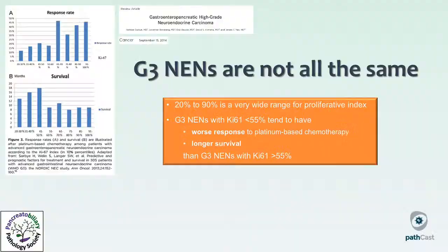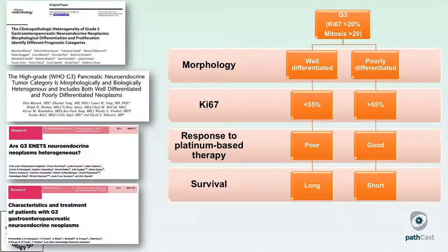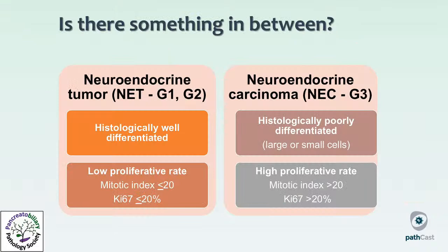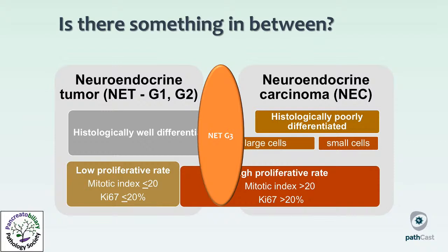It was demonstrated that G3 NEMs not only included poorly differentiated neuroendocrine carcinomas, but also a subset of well-differentiated NEMs — NETs — which did not respond to platinum-based therapy and had longer survival. There had to be something in between well-differentiated neuroendocrine tumors and poorly differentiated neuroendocrine carcinomas as classified by WHO 2010 — and this was the NET G3 category. In the WHO 2017 classification, the G3 pan-NET was introduced for the first time, recognizing that high-grade NEMs can be either well-differentiated or poorly differentiated.